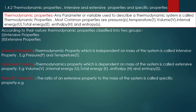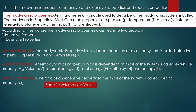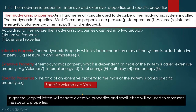We also have specific properties. The ratio of an extensive property to the mass of the system is called a specific property. In general, a capital letter denotes an extensive property, and a small letter is used to represent a specific property.